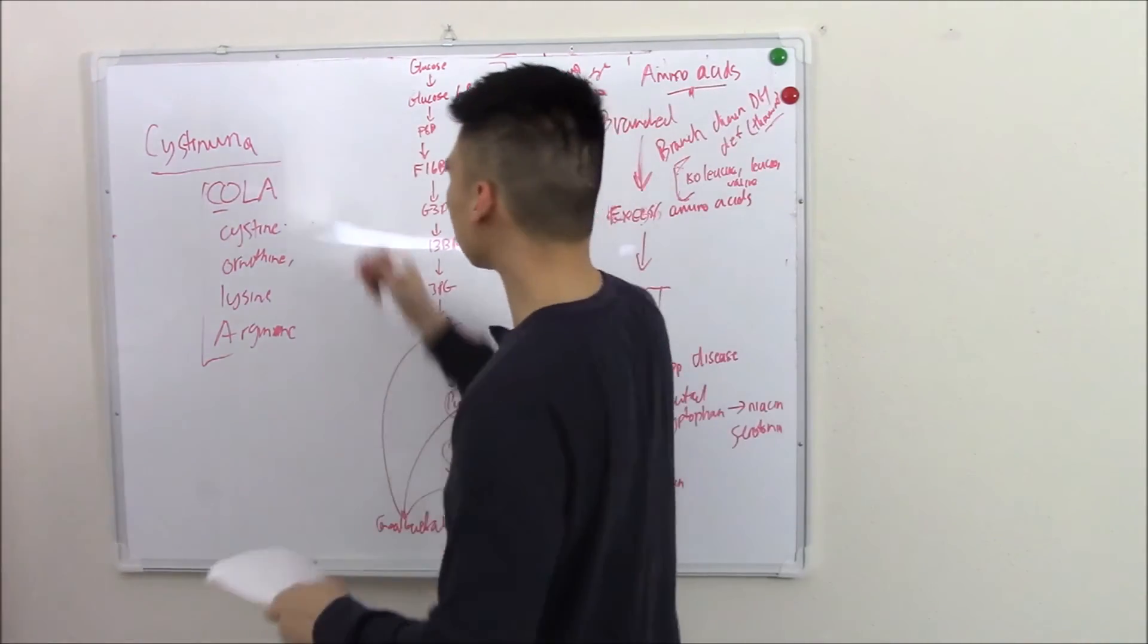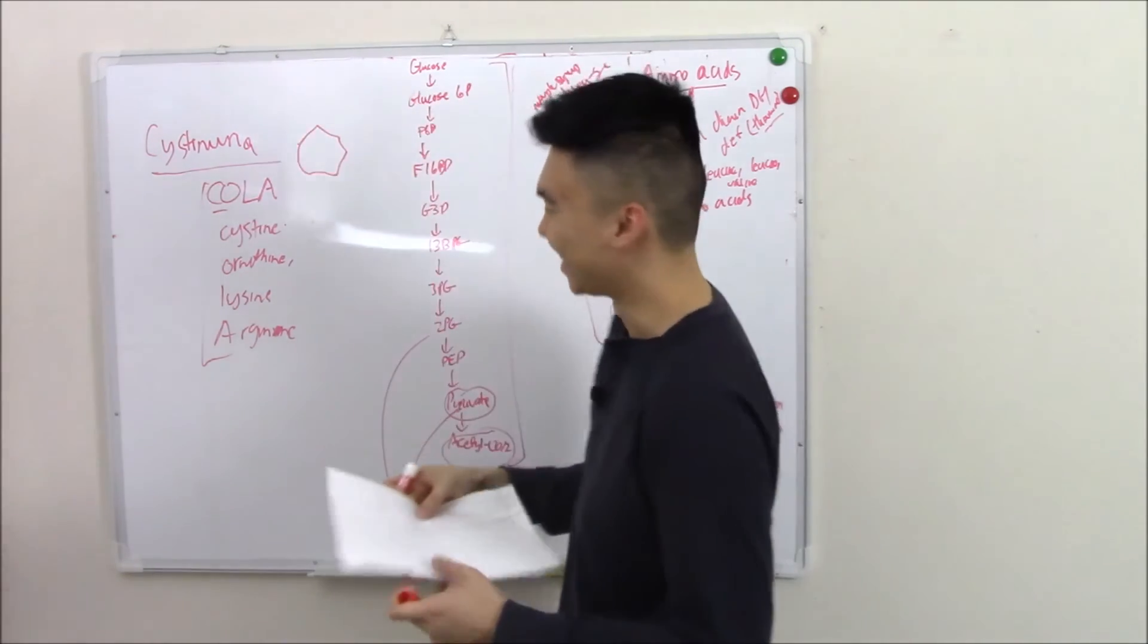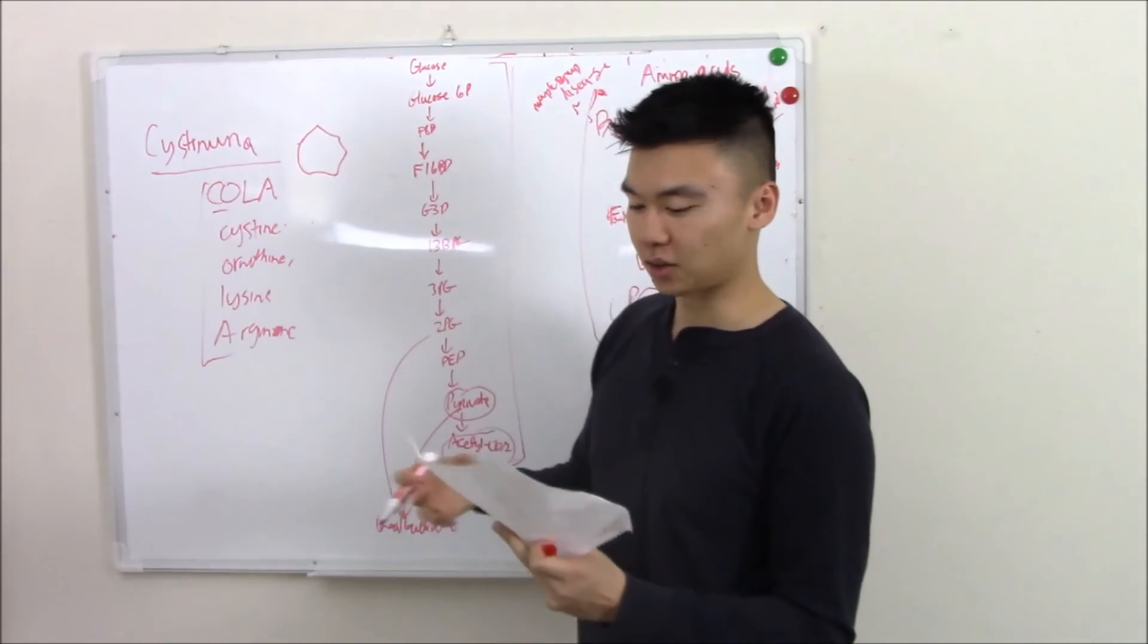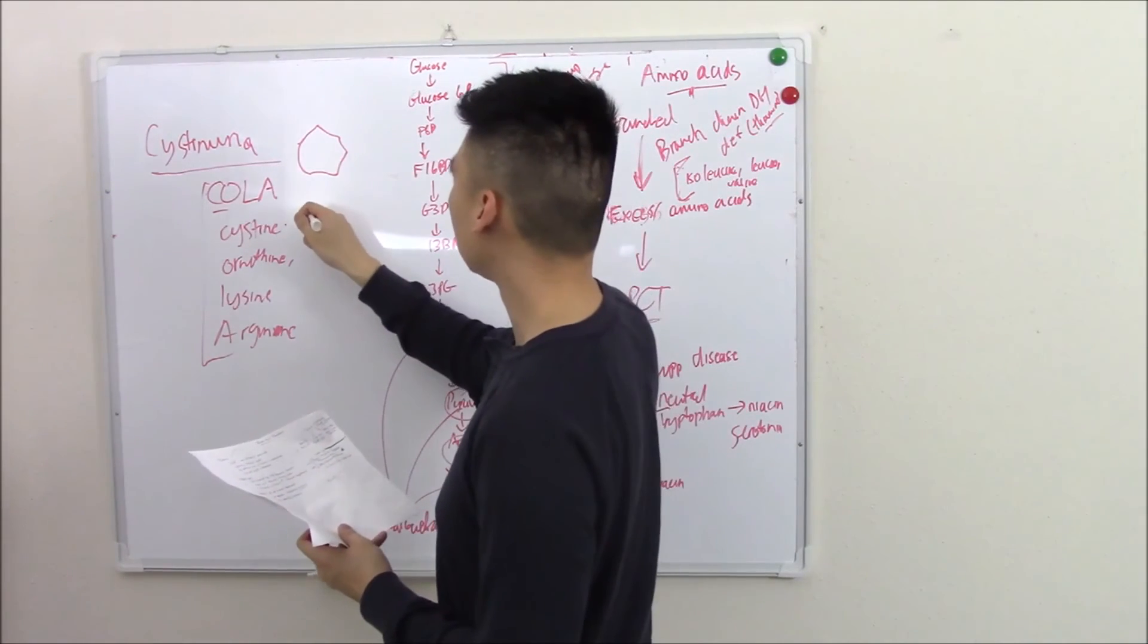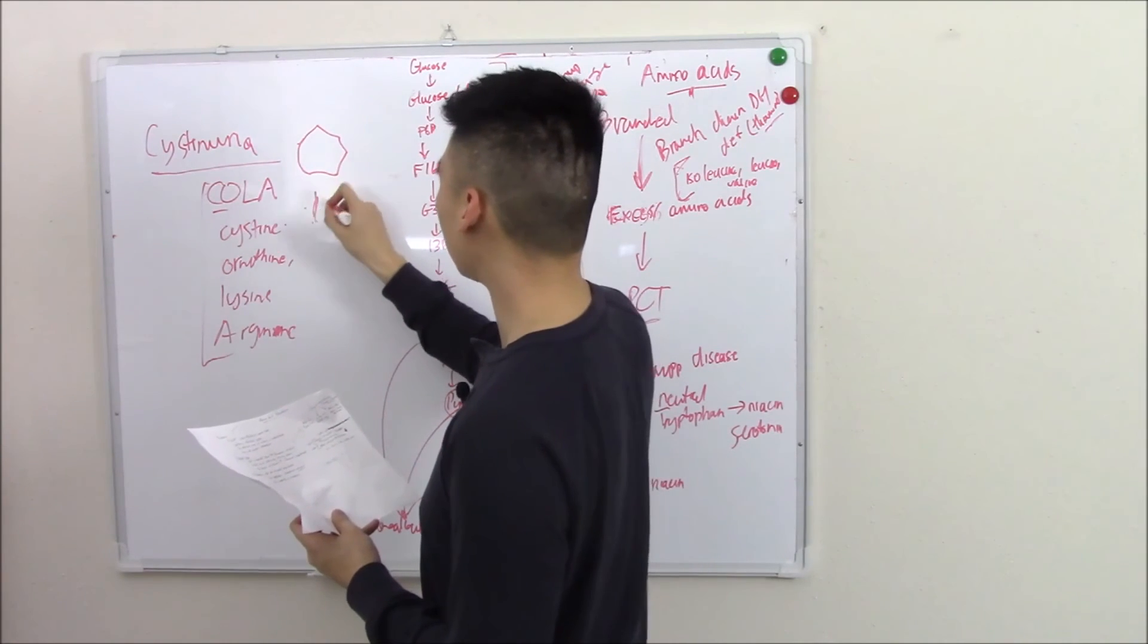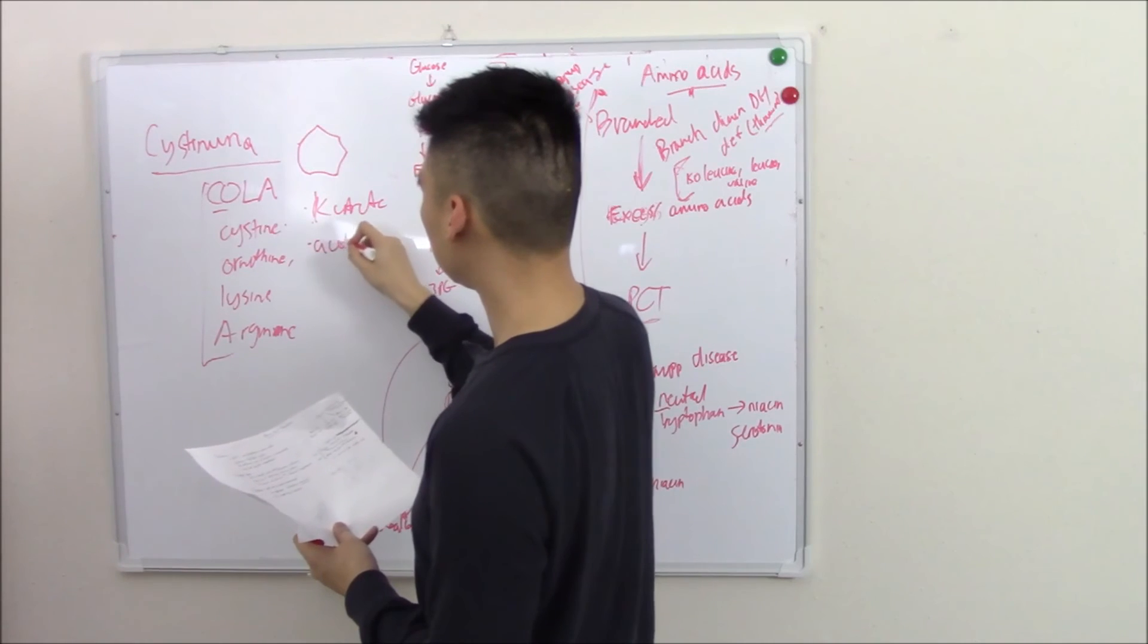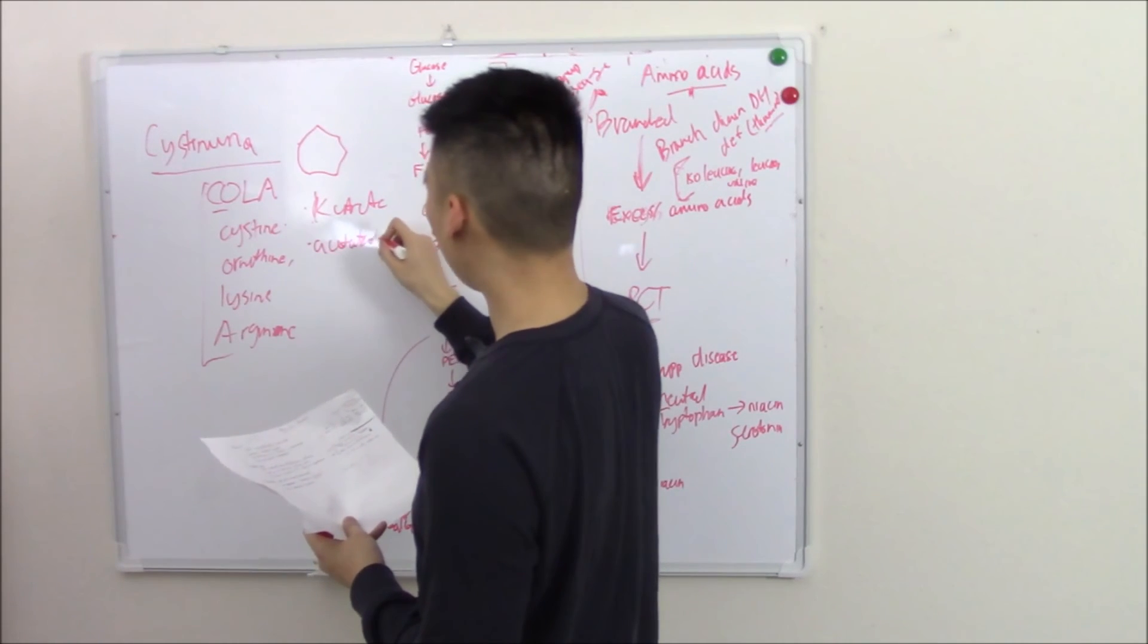That's your cysteine crystals. Those are your hexagonal crystals. I don't know if that succeeds, but they make hexagonal crystals. And you treat it by alkalinizing the urine with either potassium citrate, which is just a salt or acetazolamide.